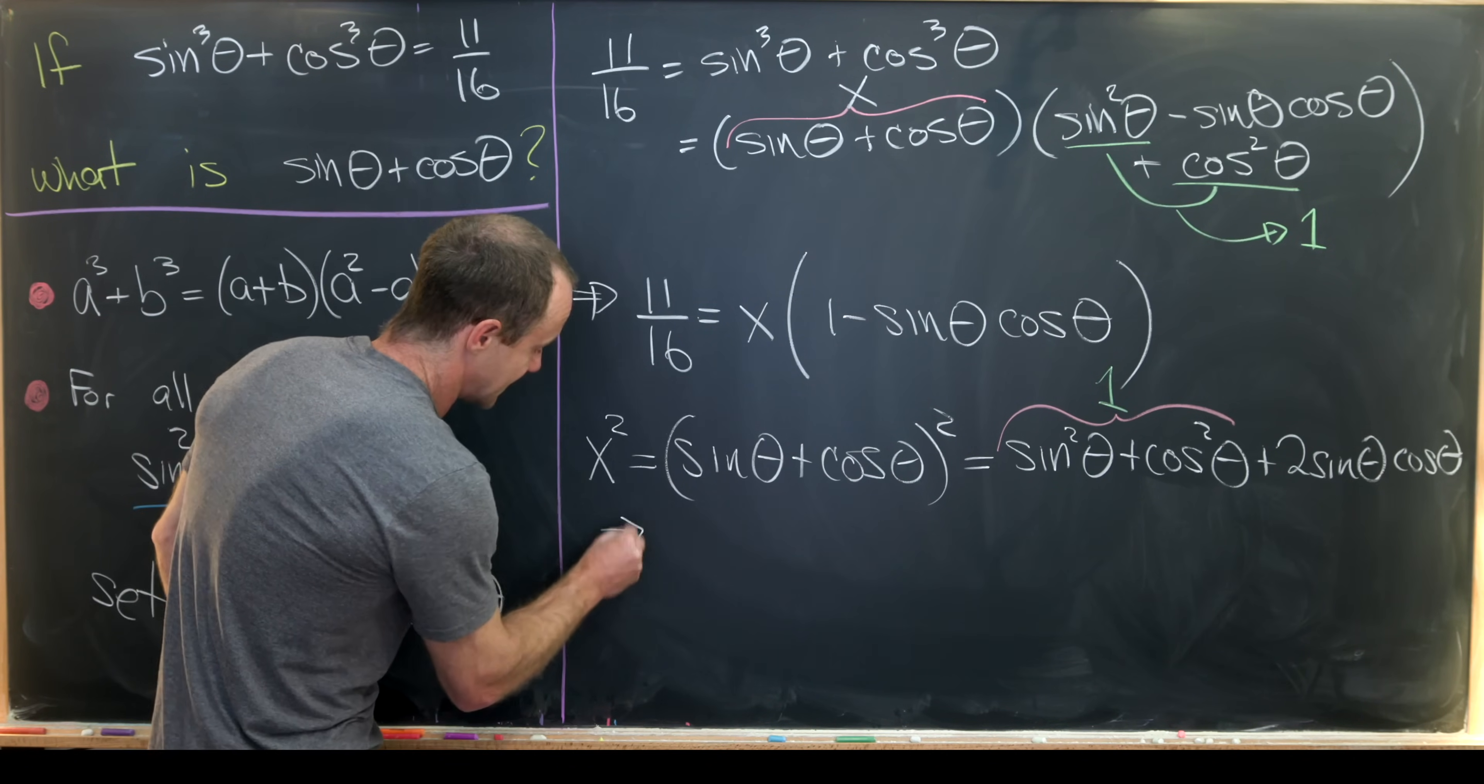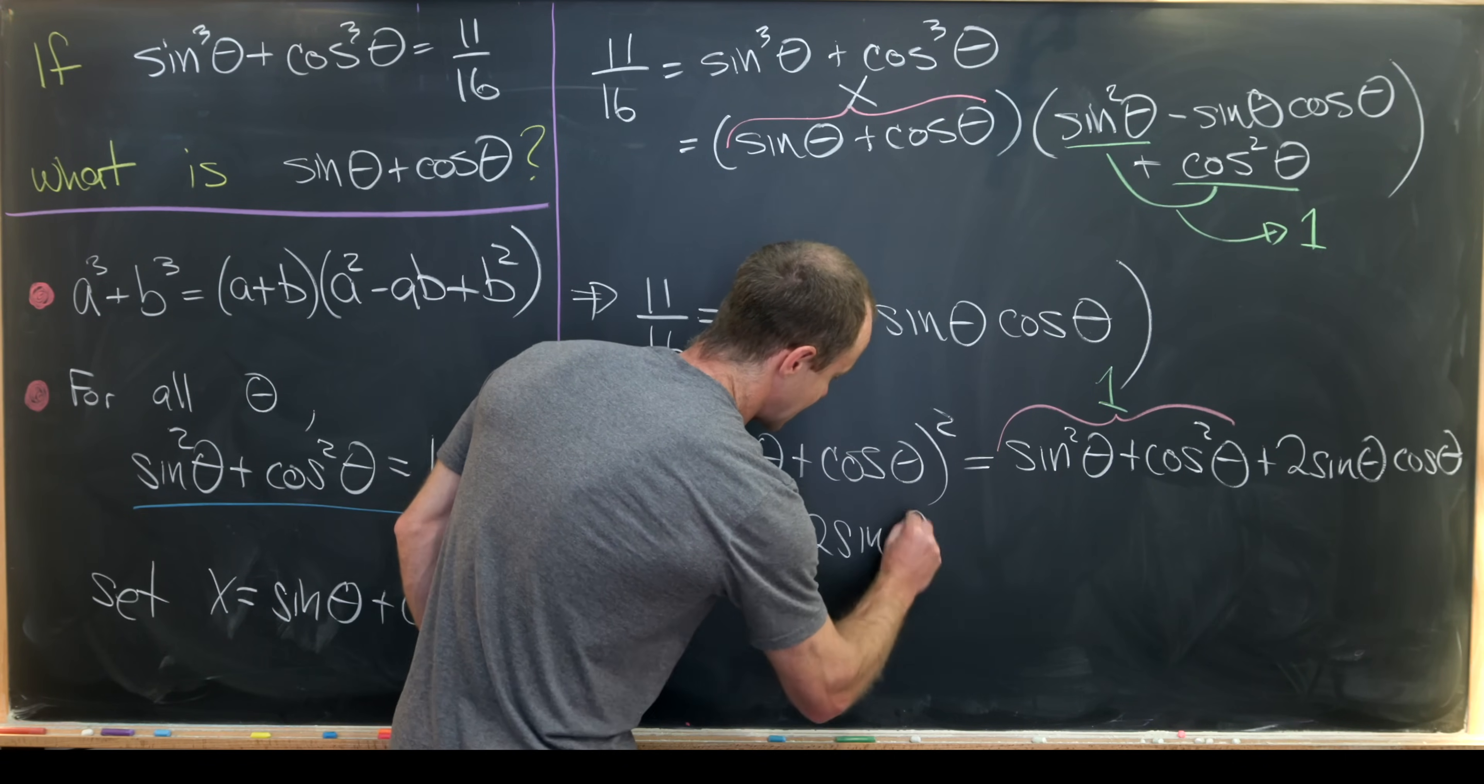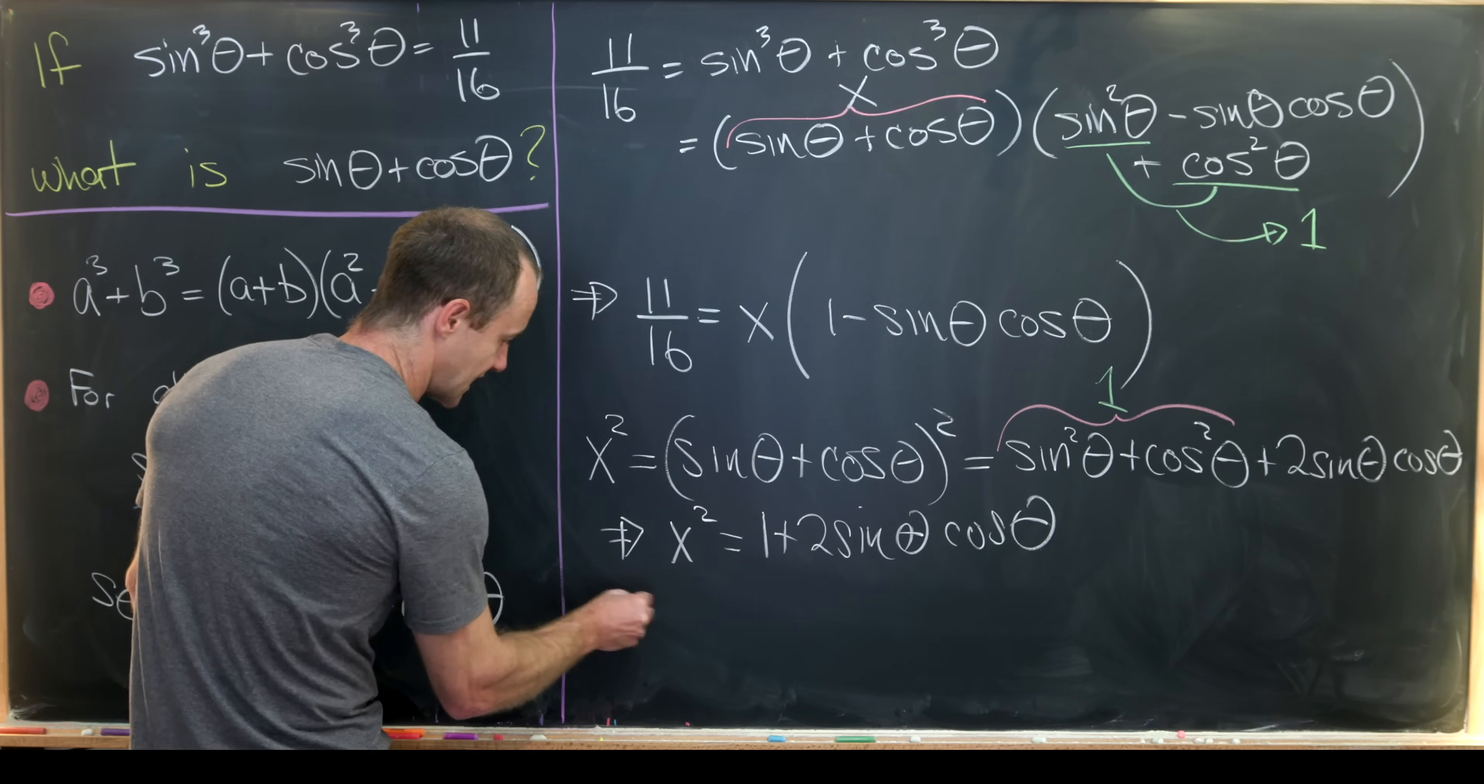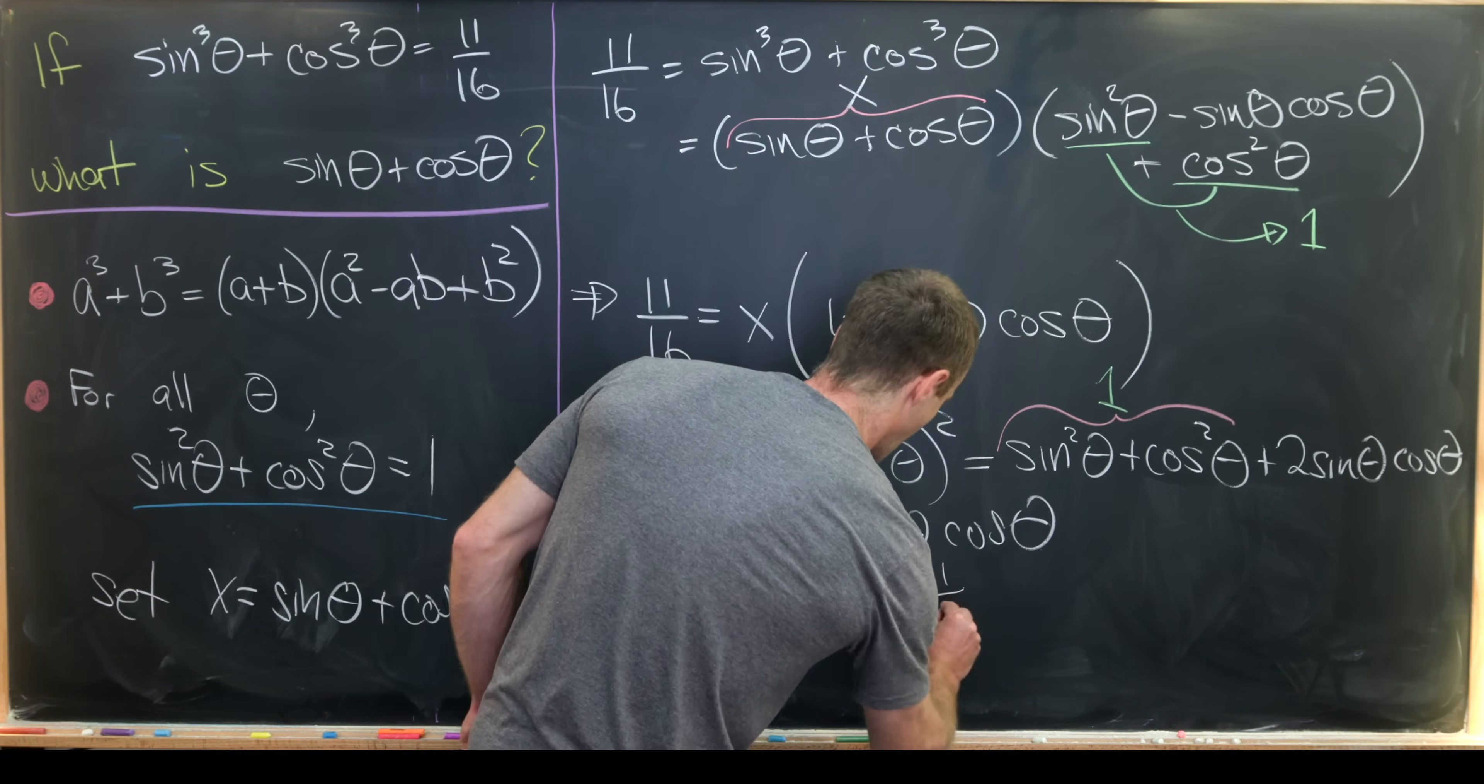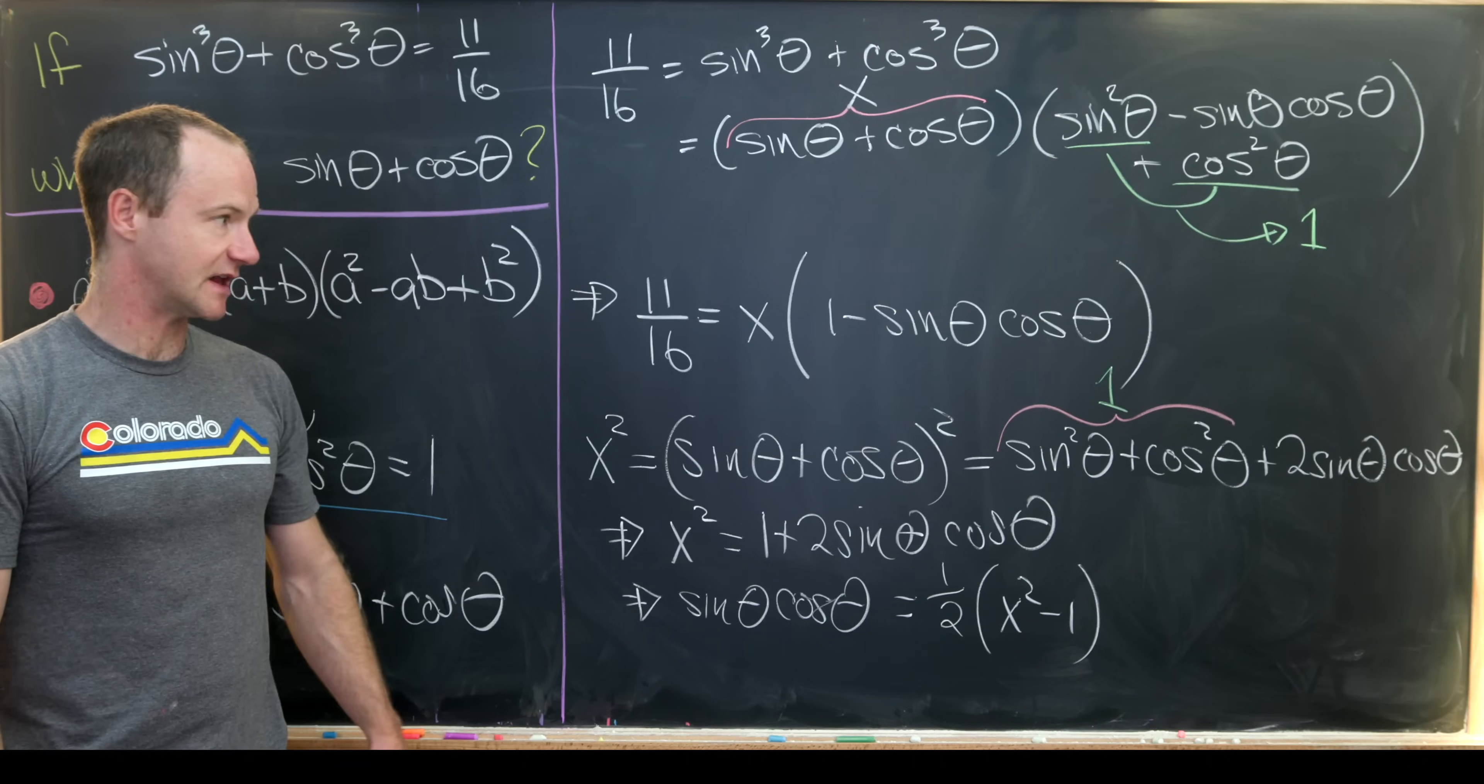Now applying the Pythagorean trig identity, we know that this is equal to the number one. So that tells us that x squared is equal to one plus two sine theta times cosine theta. But we can easily solve that for sine theta times cosine theta. Notice that sine theta times cosine theta is equal to one half x squared minus one.